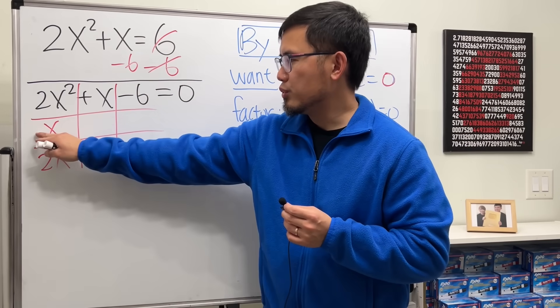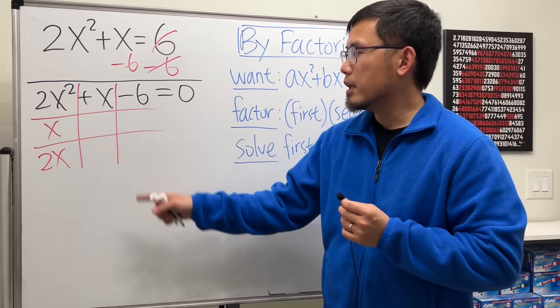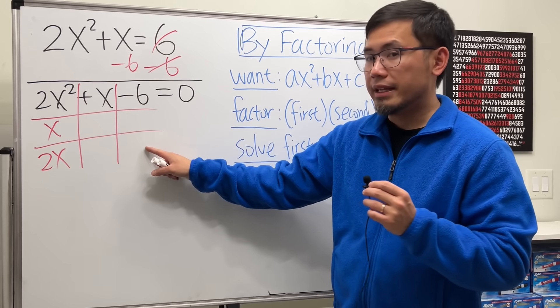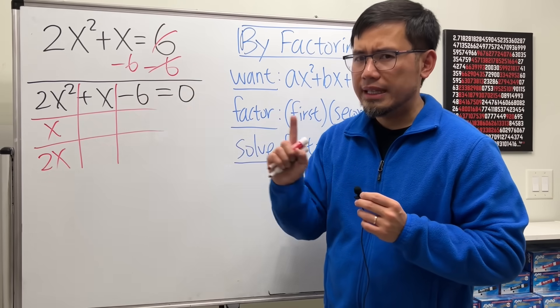Of course, if you put 2 right here, that's okay too. 2x and x, that's fine too. But you have to be careful now, because we have to come here and ask ourselves, what times what will give us negative 6? Order matters. It's tricky, this one.